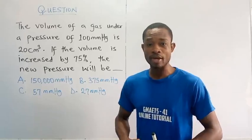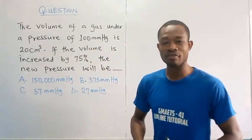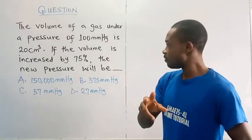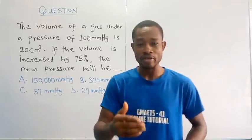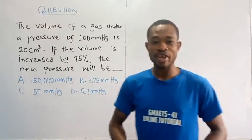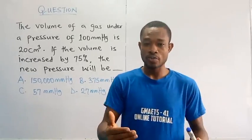It's a chemistry problem. The volume of a gas under a pressure of 100 mm of mercury is 20 cubic centimeter. If the volume is increased by 75%, the new pressure will be, with the options provided here in mm of mercury. So we are looking for the new pressure.